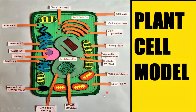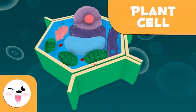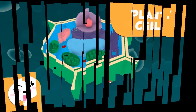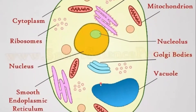This is a cross-section of a plant cell. Here you can see the nucleus and here the nucleolus. Here mitochondria, here cytoplasm, ribosomes, smooth endoplasmic reticulum without ribosomes, Golgi complex, vacuole, nucleolus, and mitochondria.